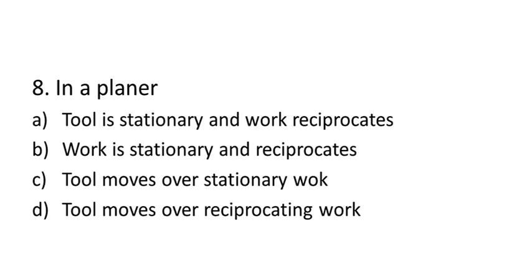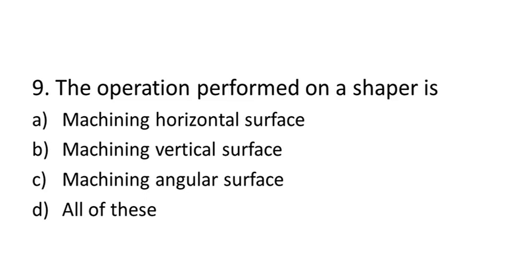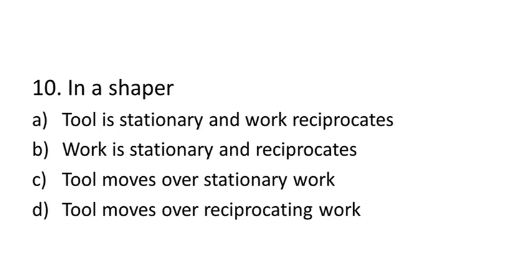Question eight: in a planer, the correct answer is option one — tool is stationary and work piece reciprocates. Question nine: the operation performed on a shaper includes machining horizontal surface, machining vertical surface, and angular surface — all of these can be performed on a shaper machine, and even convex and concave surfaces can also be machined. Question ten: in a shaper, tool moves and work is stationary — answer number three.